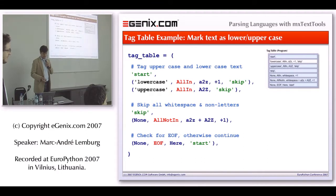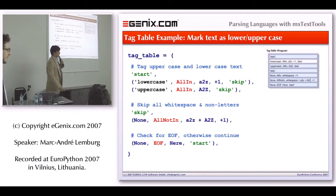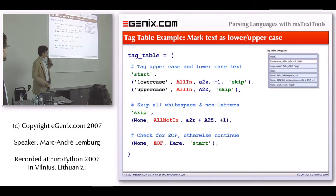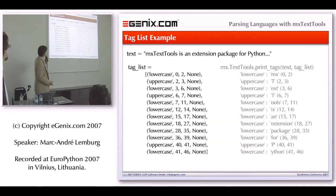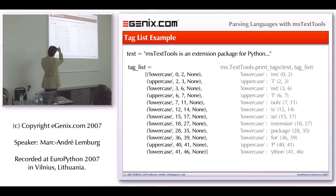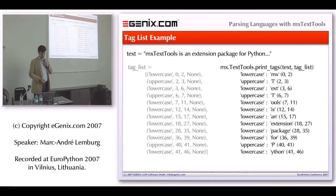Someone asked why there's a plus-one in the lowercase line but not in the uppercase line. You could put a plus-one there as well, because the skip section basically just runs to the same place, which is exactly the same as doing a plus-one. Just to show you some output — this is how a tag list looks. It's not very impressive: you see the numbers and the tags — lowercase, uppercase — and the string at the top that's being parsed. And because this is hardly readable, there's a helper function that outputs the tags and the slices in the text so you can see exactly where things matched.